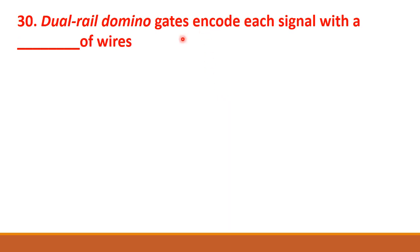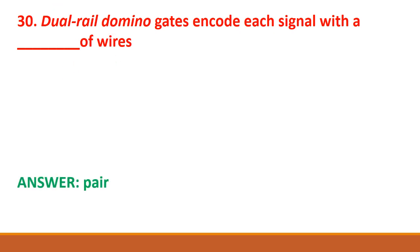Dual rail domino gates encode each signal with a pair of wires.